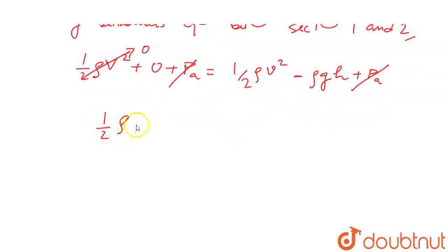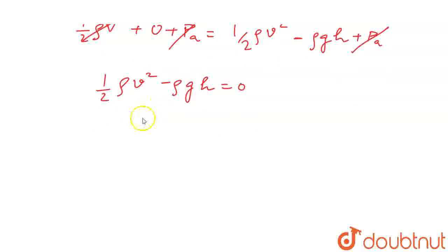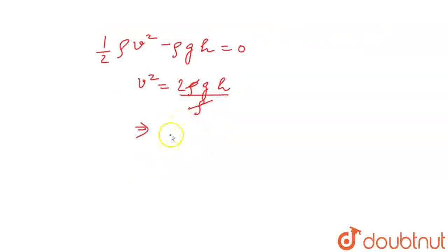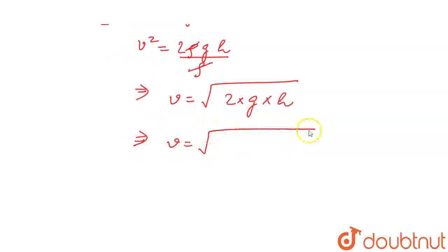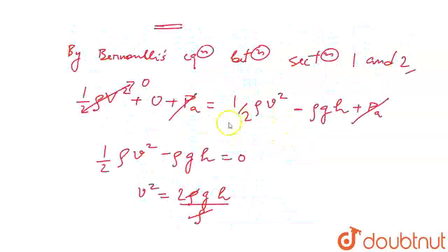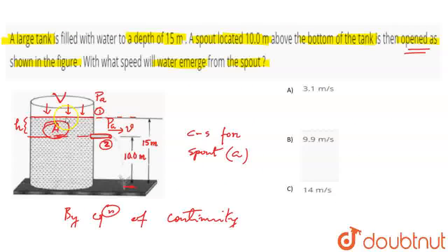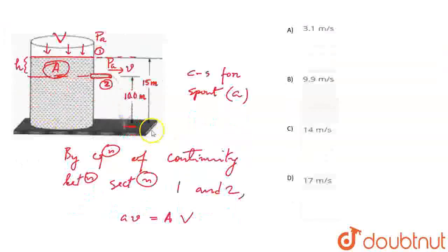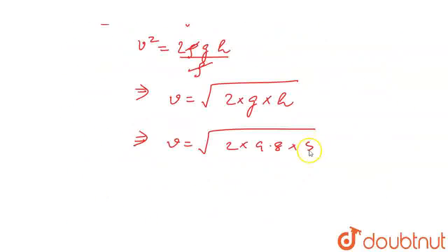P_a cancels. Capital V is almost equal to 0, so we get half rho v squared equals rho g h. Therefore v squared equals 2gh, and v equals square root of 2gh. That will be equal to square root of 2 into 9.8 into h. The depth h from the surface is 15 meters minus 10 meters, which equals 5 meters.